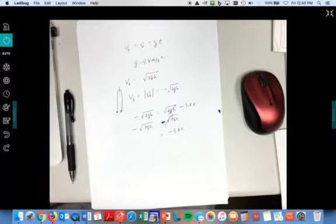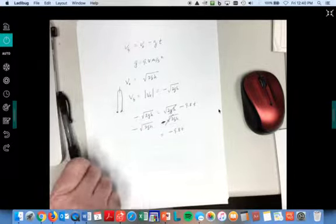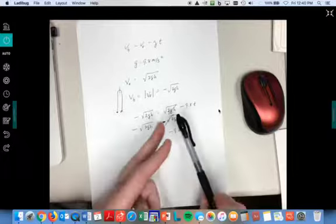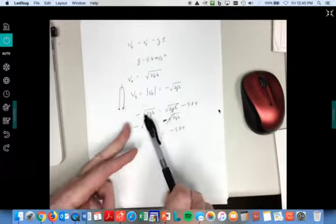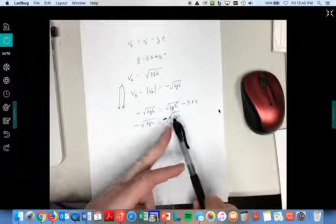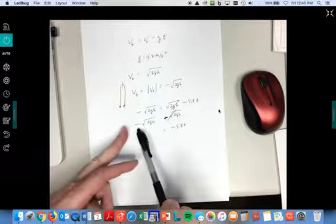Don't be afraid of it. Whatever we do on this side, we have to do to this side. So if we're going to subtract square root of 2GH from this side, we have to subtract it from the other side too. We'll make it negative over here.